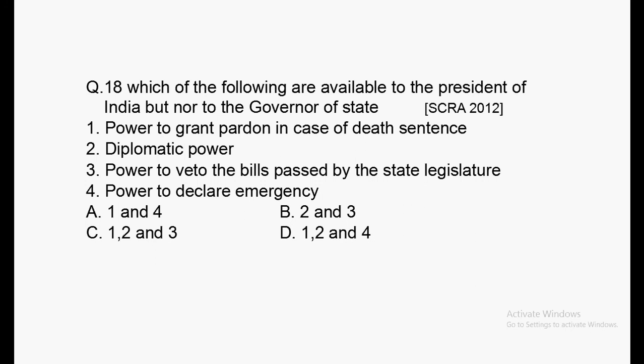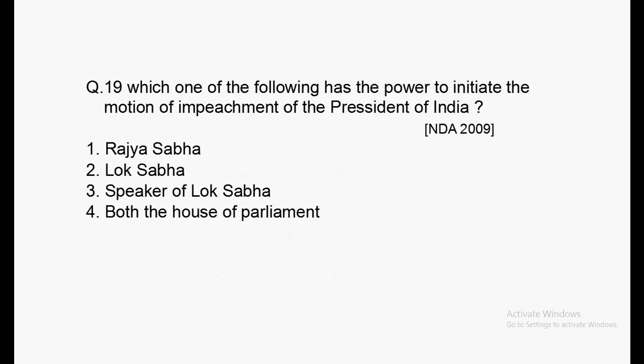Next question: Which of the following powers are available to the President of India but not to the Governor of a state? Asked in SCRA 2012. Options: power to grant pardon in case of death sentence, diplomatic powers, power to veto bills passed by the state legislature, power to declare emergency. Answer: options 1, 2, and 4 — power to grant pardon in death sentence cases, diplomatic power, and power to declare emergency.